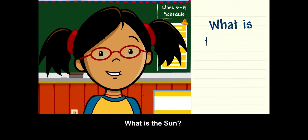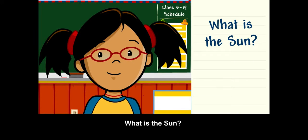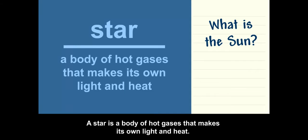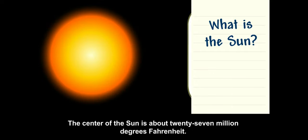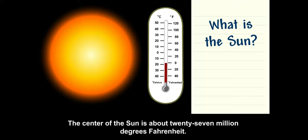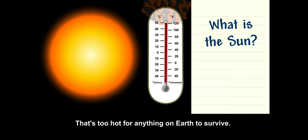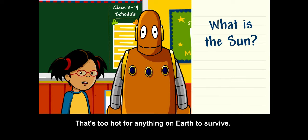What is the sun? The sun is a star. A star is a body of hot gases that makes its own light and heat. The center of the sun is about 27 million degrees Fahrenheit. That's too hot for anything on Earth to survive.